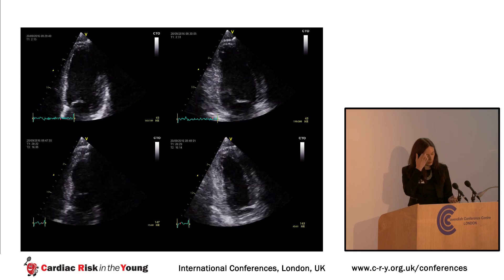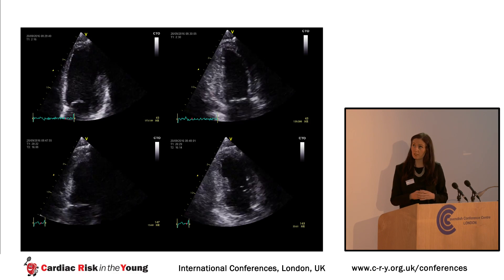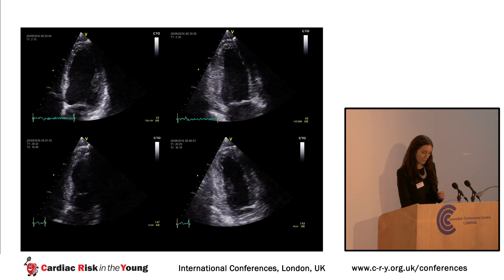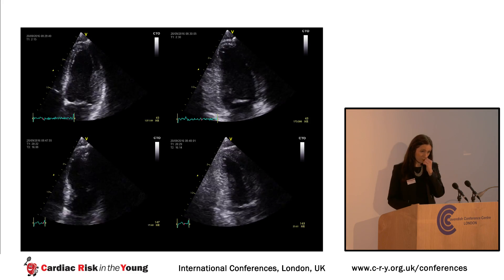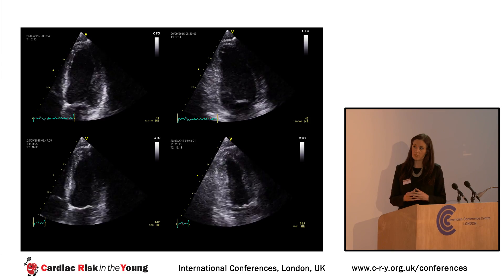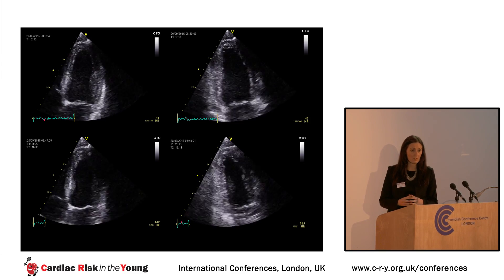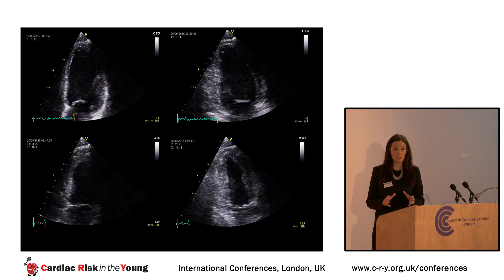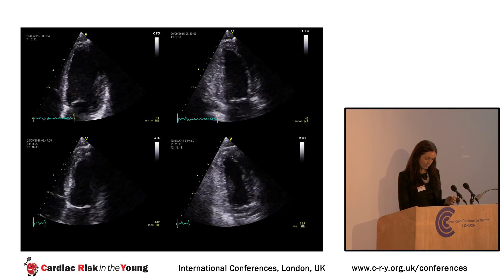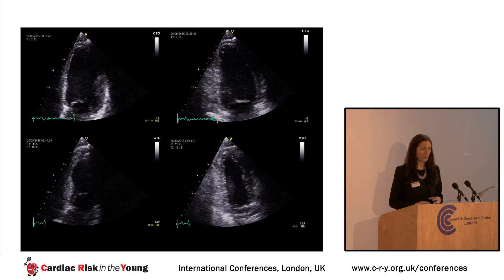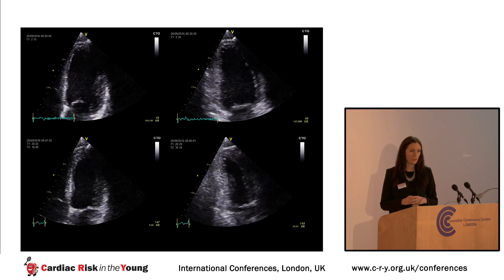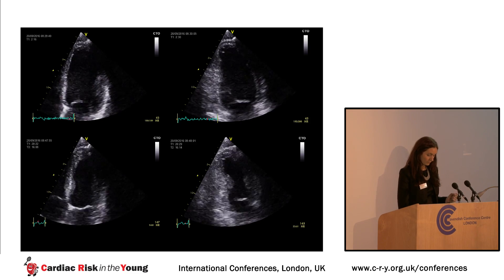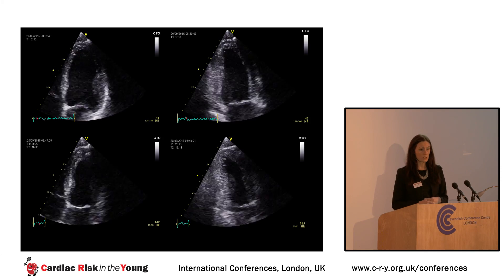This is an example of a UCI cyclist. You can see that at baseline on the four-chamber view, the ejection fraction looks at the borderline level. But when we exercise them, you can see clearly that in both the four- and two-chamber views, the left ventricular cavity dimensions decrease both in systole and diastole, with an improvement in ejection fraction from around 50% to about 70% at peak exercise. This is in contrast to a patient with very mild dilated cardiomyopathy with a similar baseline ejection fraction of 45% to 50% — in that case, the LV function doesn't really improve or change.